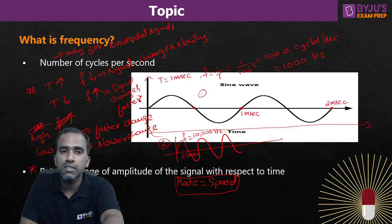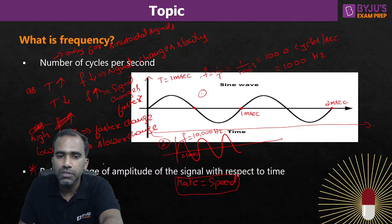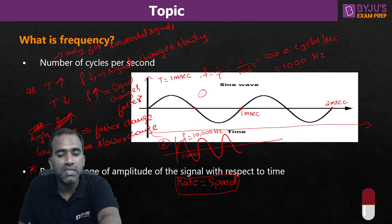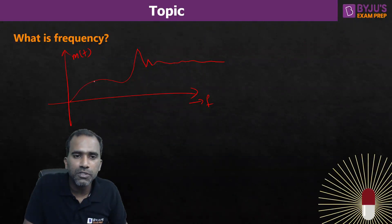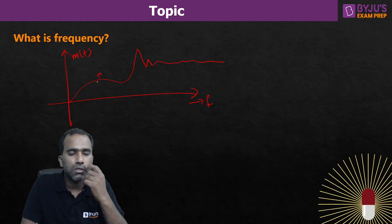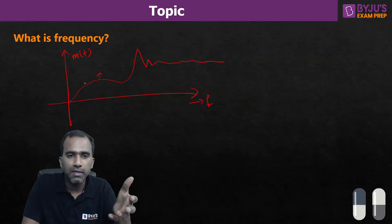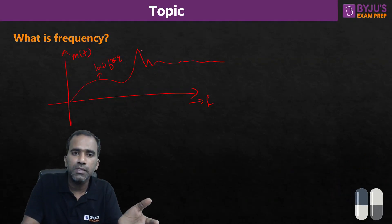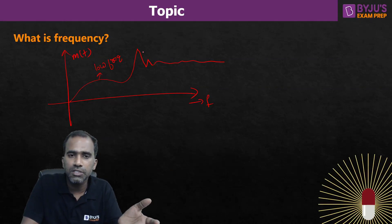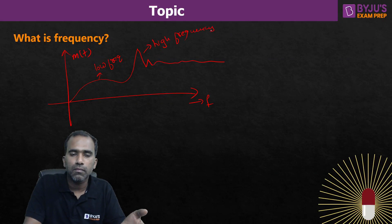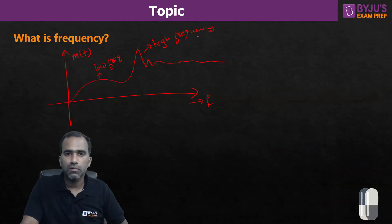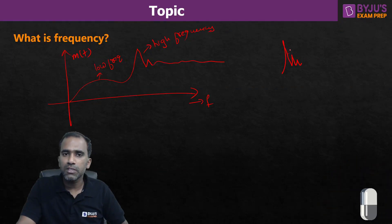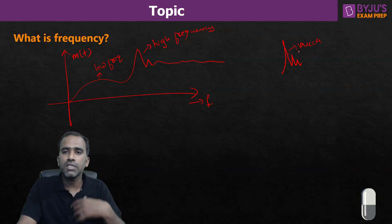That is why I have given the rate-of-change definition, which is valid for all signals. In a practical signal, where the amplitude changes slowly, that corresponds to low frequency. Where there is a sudden, fast change in amplitude, that corresponds to higher frequency. Very sharp changes correspond to much higher frequency. High and low frequency is always relative — it depends on how fast the signal is changing.